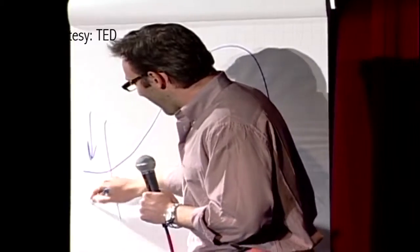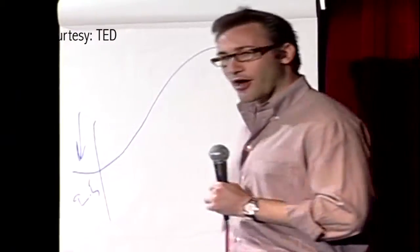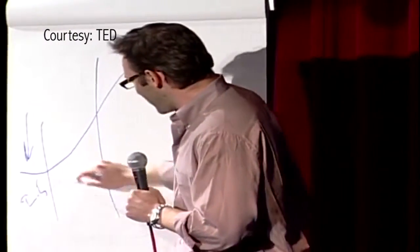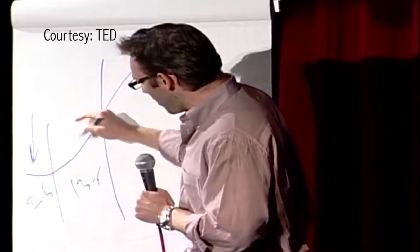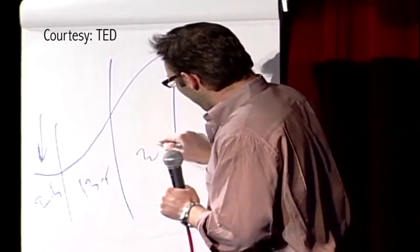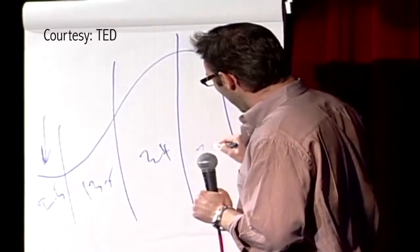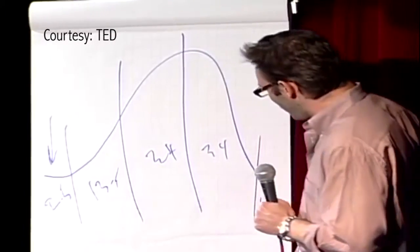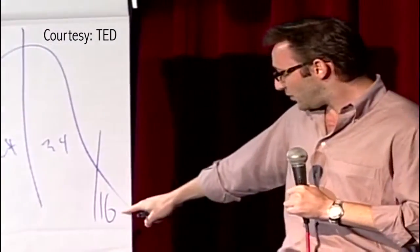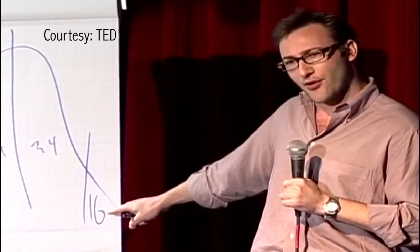The first 2.5% of our population are our innovators. The next 13.5% of our population are our early adopters. The next 34% are your early majority, your late majority, and your laggards. The only reason these people buy touch-tone phones is because you can't buy rotary phones anymore.